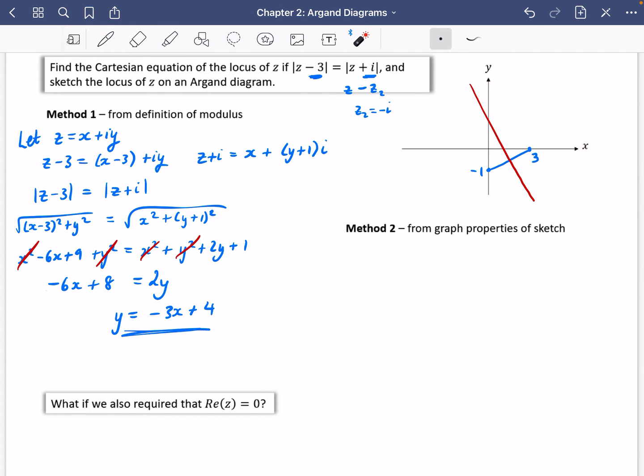So perpendicular bisector, we need to know two things. We need to know its gradient and we need to know the midpoint. So I'm going to start off by finding the gradient of the blue line. So the gradient of the blue line, it's pretty easy to see this one. It is going to be the change in Y, which is just 1, and the change in X, which is 3. So it's just 1 divided by 3, which means that the gradient of the perpendicular is going to be minus 3.